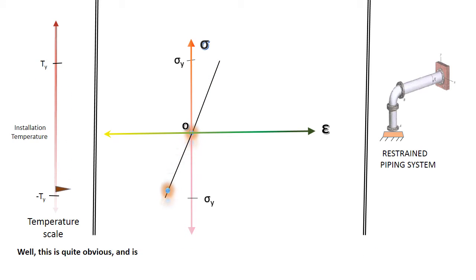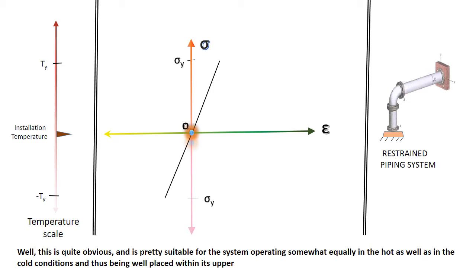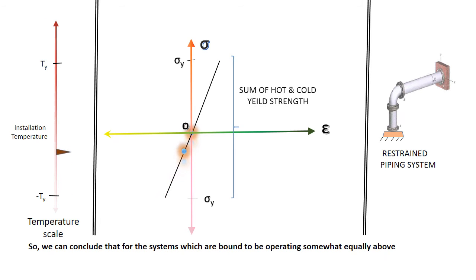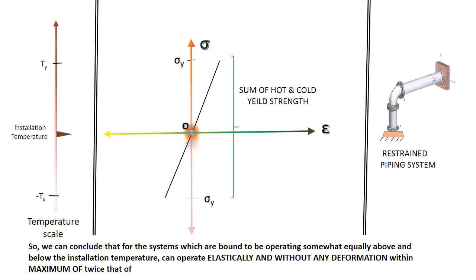Well, this is quite obvious and is pretty suitable for the system operating somewhat equally in the hot as well as in the cold conditions and thus being well placed within its upper and lower limits of deformation. So we can conclude that for the system which is bound to be operating somewhat equally above and below the insulation temperature, can operate elastically and without any deformation within maximum of twice that of the yield strength. That is, the sum of the hot and the cold yield strength.